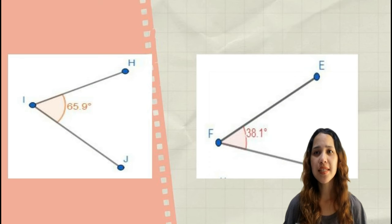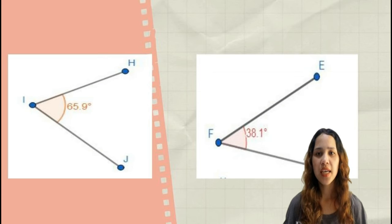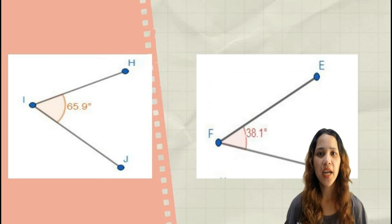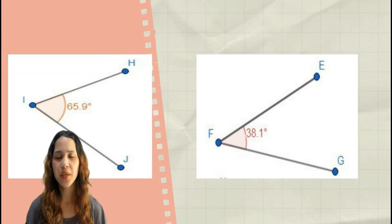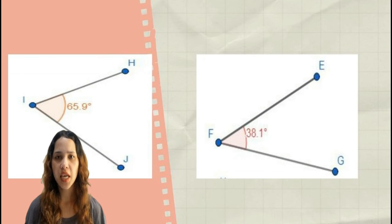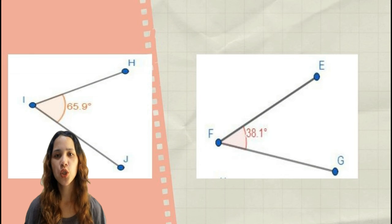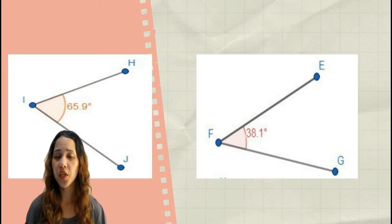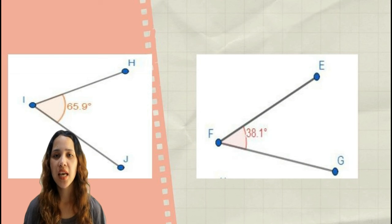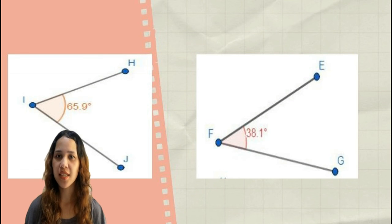In the first diagram, there is a 65.9-degree angle whose vertex is I, with two rays H and J. In the second diagram, the 38.1-degree angle has a vertex at F — not the same as the first diagram — and two rays E and G. Therefore, they are not connected with each other. That is how non-adjacent angles differ from adjacent angles.